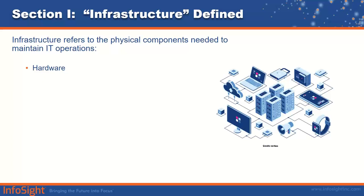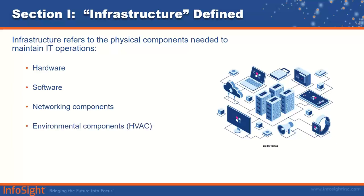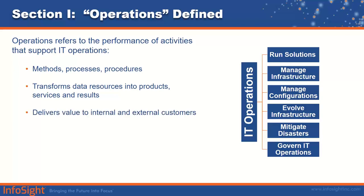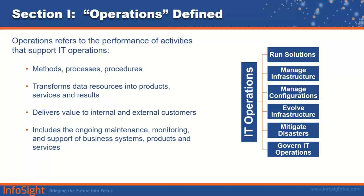Infrastructure is defined as the physical IT operations components needed, such as hardware, firewalls, servers, software, operating systems, networking components like cabling, hubs and switches, environmental components like HVAC systems, and telecommunications such as IP phone systems and messaging. Operations is defined as the activities and performance of those activities that support IT operations — the methods, processes, and procedures used, the steps that transform data resources into tangible products and services. Operations delivers value to internal and external customers and includes the maintenance, monitoring, and support of business systems, products, and services.